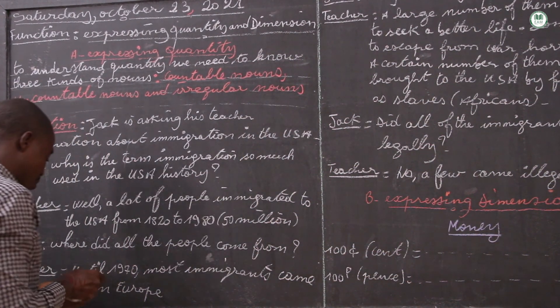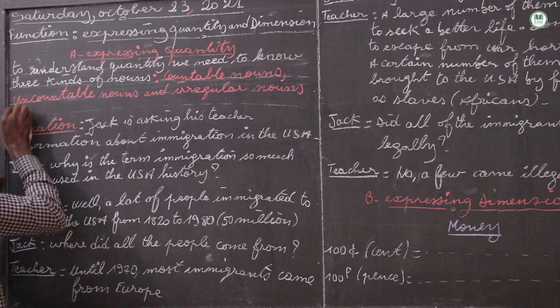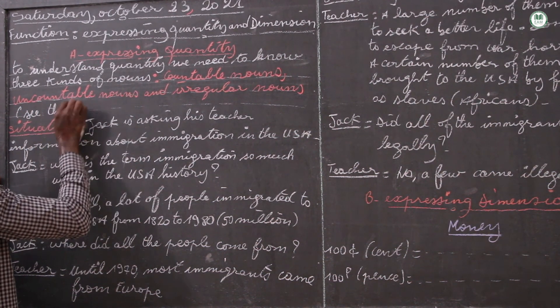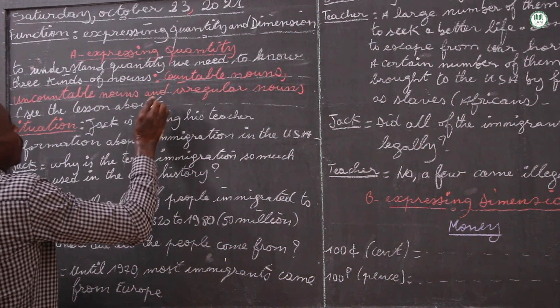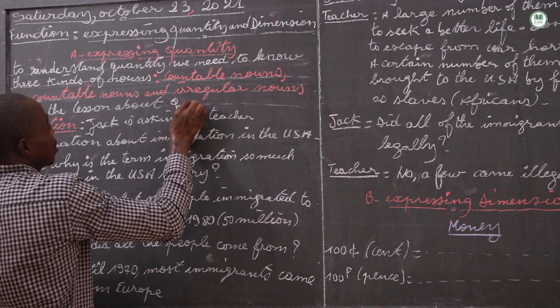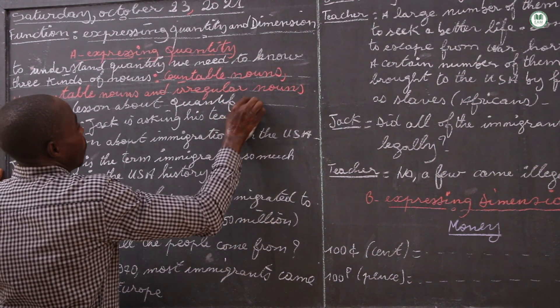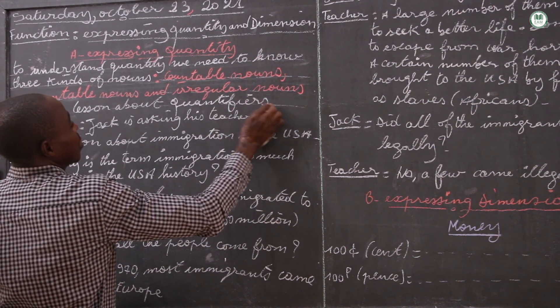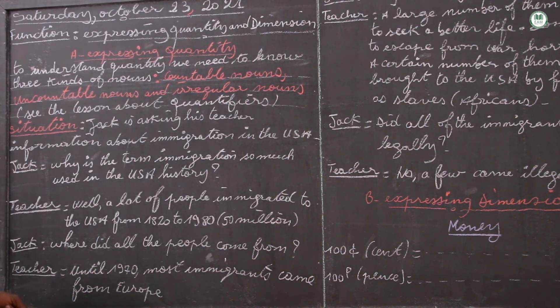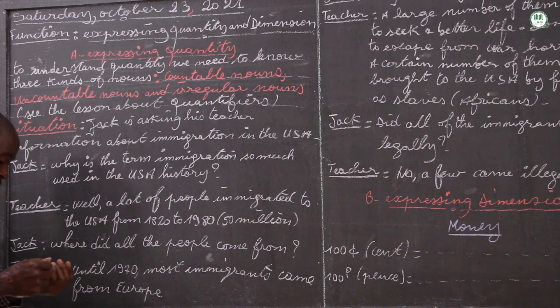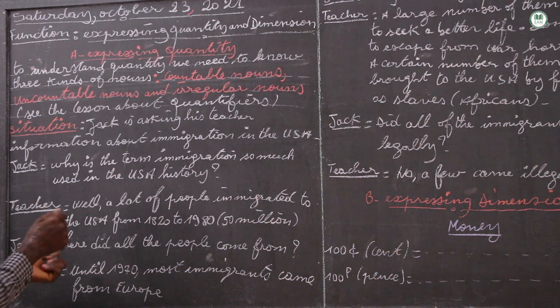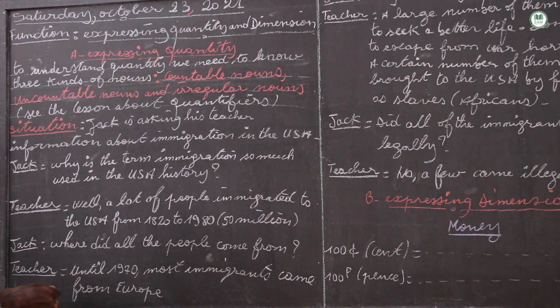And also our reference is we have at least to see the list about quantifiers. Now the situation of countable nouns, uncountable nouns, and irregular nouns, we will see some through our dialogues. So it is clear here as it links to immigration, this is what we are saying.